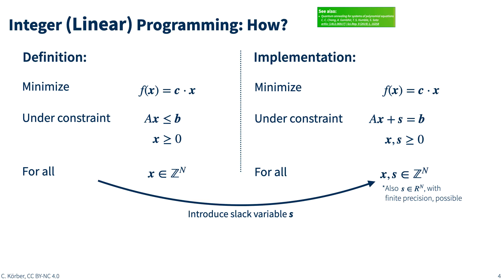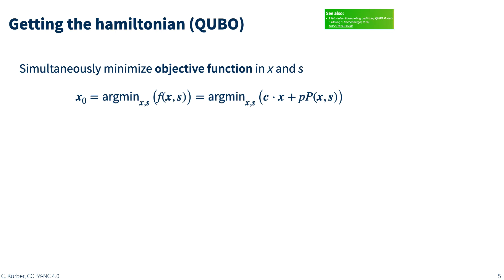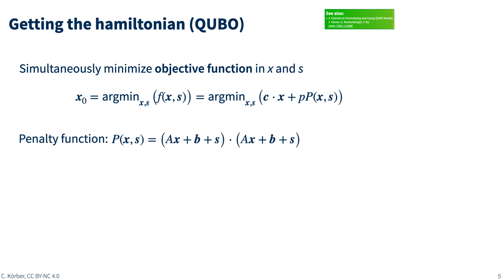The key concept for mapping these inequalities to the annealer hardware is the introduction of slack variables. The basic idea is that instead of writing Ax smaller or equal to b, you can just write Ax plus s equal to b, where s is some integer number, or it can also be a real number with finite precision. What you realize is that instead of minimizing your objective function over the variable x, you now have to minimize a new objective function over both x and s. This new objective function is a combination of your original objective function c dotted into x, but also a new penalty function times a constant small p.